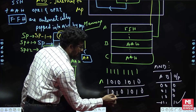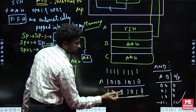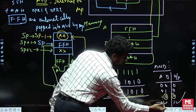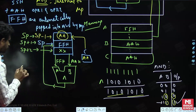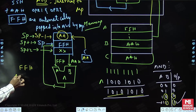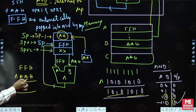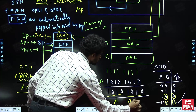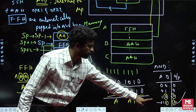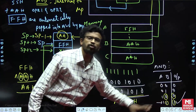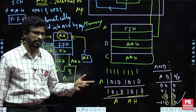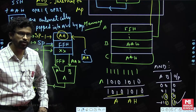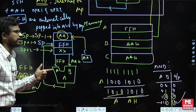Anything ANDed with FF (all ones) gives the same value as the second input. This is because in AND logic, if one input is high (1), whatever the second input is, that same value appears at the output. This property is used for masking in real-time switching logic. So the answer is AAH.